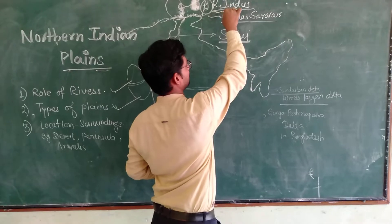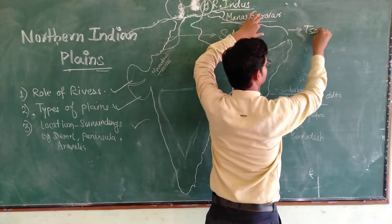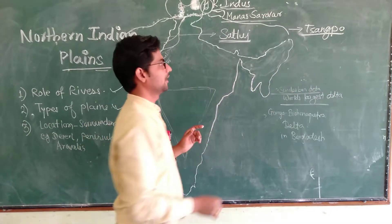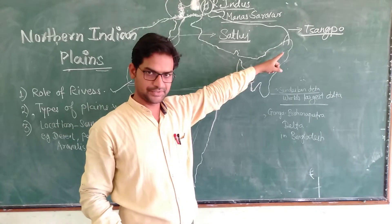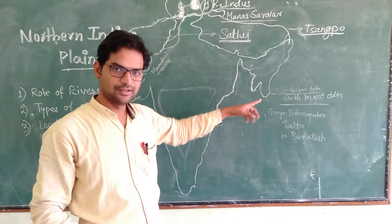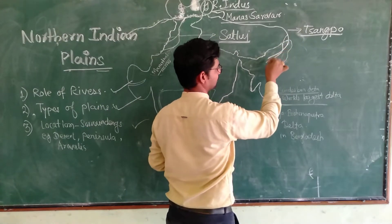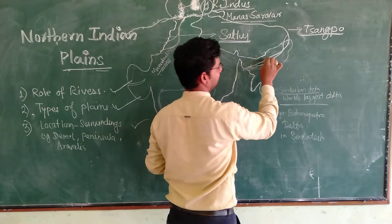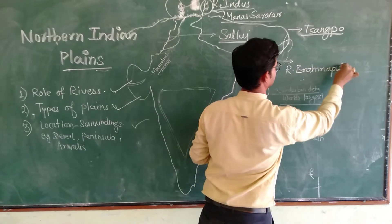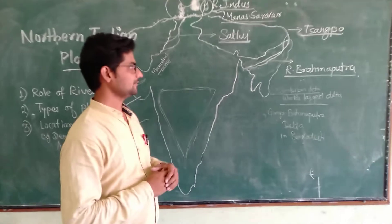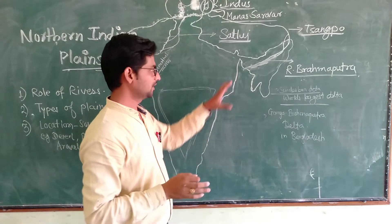Number two — from Manasarovar, the second river originates and passes through China, where it is known as the Tsangpo or Sandpur. During its entry into India, this river divides into two channels, Lohit and Dibang, entering Arunachal Pradesh. After entering Arunachal Pradesh, these two channels come together and take a larger shape. In Assam, this river is known as River Brahmaputra.